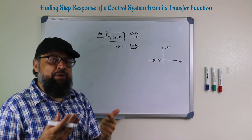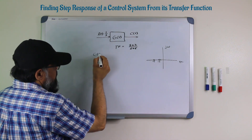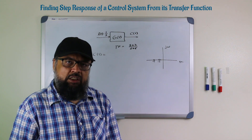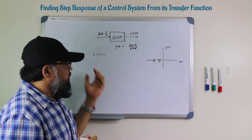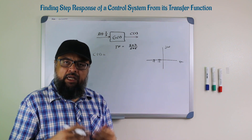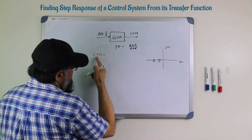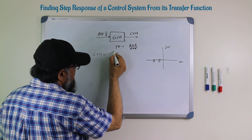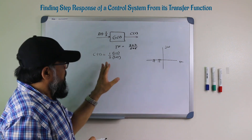Now when we apply this step input, the output is the product of the input and the transfer function. So the output of the system C(s), also called the response of the system, can also be found in the time domain. Starting from the s-domain, when we apply the step input, the output will be (s plus 2)/(s plus 5) multiplied by 1/s. So this is the output of the system.